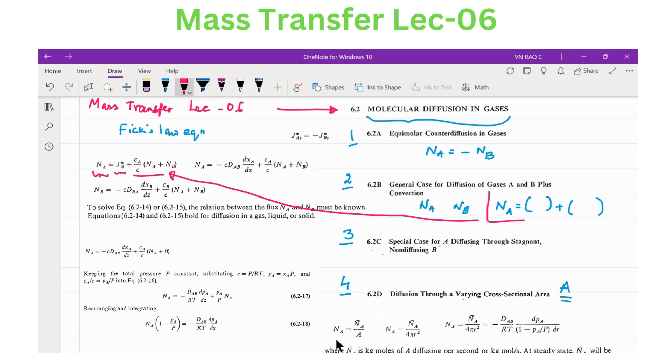As we know from the Fick's law equation, jA star equals minus C DAB dxA by dz plus CA by C. So this is the equation we write. Similarly, this is for NA, we can write for NB also. NB means molecular or molar flux of component B.